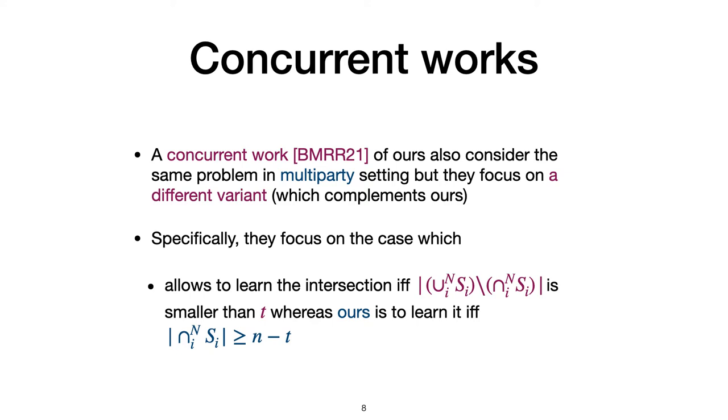And we achieve a T-square communication complexity for each party. Actually, there's a concurrent work BMRP21 of ours also considering the same problem in multi-party setting. But they focus on a slightly different variant, which complements ours. Specifically, we focus on the case which allows parties to learn the intersection if and only if the difference between the union and the intersection is smaller than T, whereas theirs is to learn it if and only if the intersection is larger than N minus T.